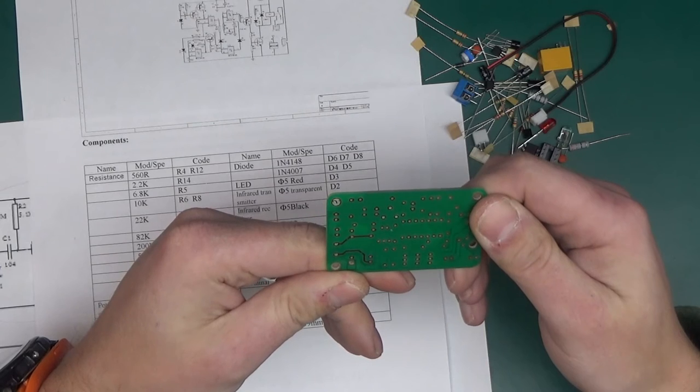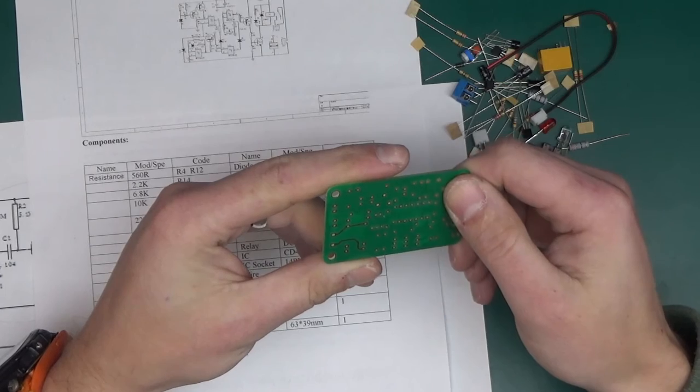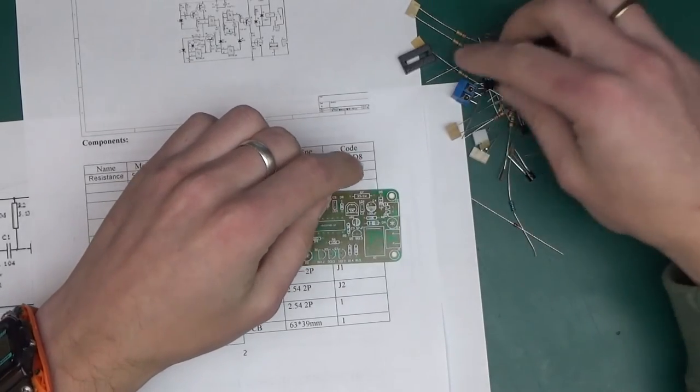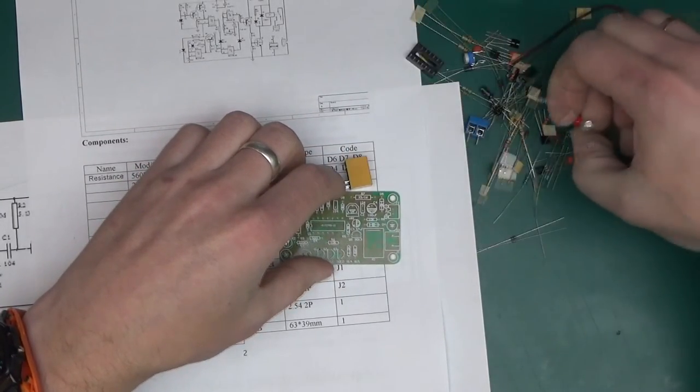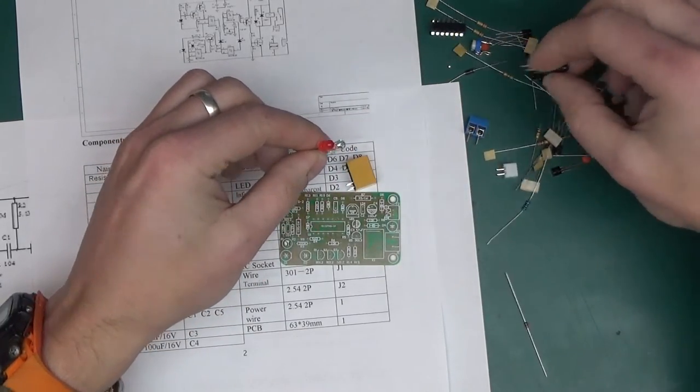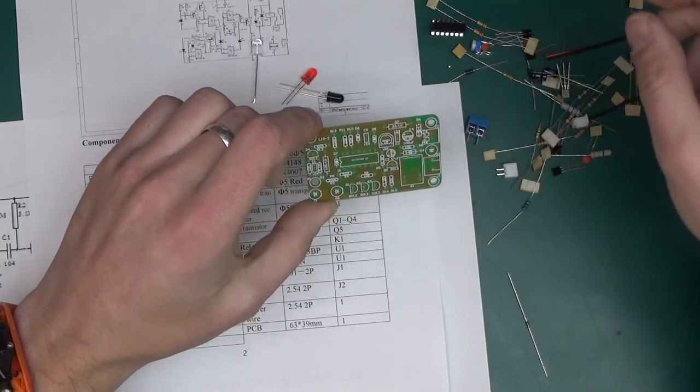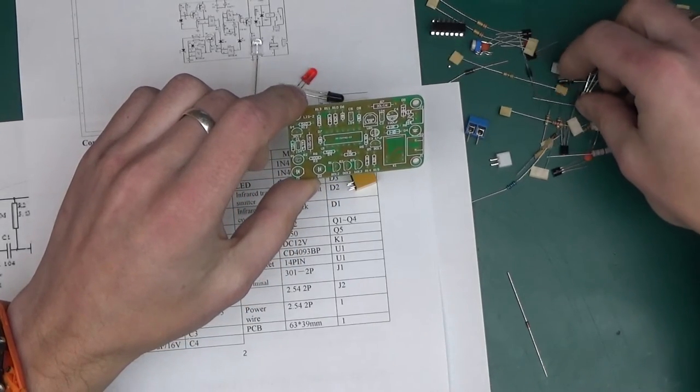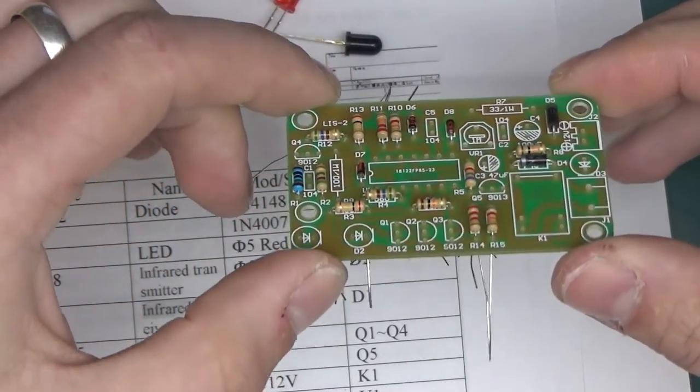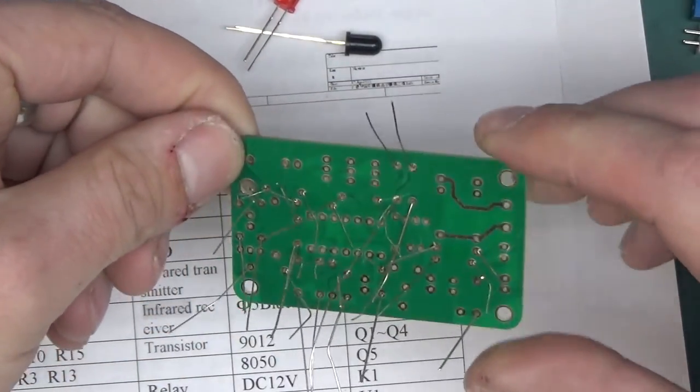Best practice is to stuff it with the smallest components first, so I'm going to stuff in all the little resistors and diodes first. And here it is, most of the low profile parts are stuffed in, so let's quickly solder this up.